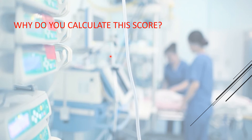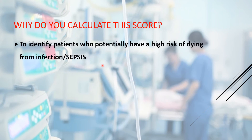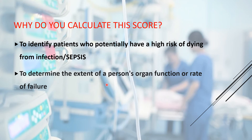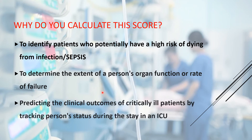Why do you calculate the score? Firstly, it is done to identify patients who potentially have a high risk of dying from infection or sepsis. Secondly, it is done to determine the extent of a person's organ function or rate of failure. Thirdly, it is done to predict the clinical outcome of critically ill patients by tracking their status during their stay in an ICU.